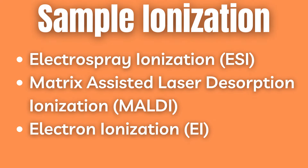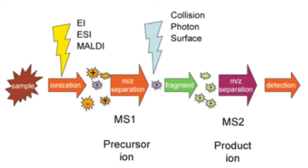In a nutshell, this is done by first ionizing the sample using electrospray ionization, matrix assisted laser desorption ionization, or simply electron ionization, or any other ionization method. This generates a mixture of ions from the sample. These are called precursor ions and are selected based on a specific mass to charge ratio in the first mass spectrometry. Then they are further fragmented to generate the product ions for detection in the second mass spectrometry.